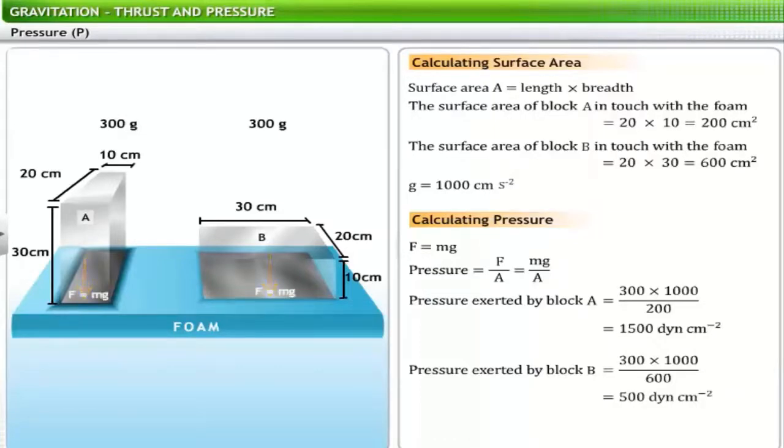Thus, in block A, the same thrust was acting on a smaller surface area. Hence, the pressure exerted by block A was higher. This explains why the foam showed more compression where block A was placed.